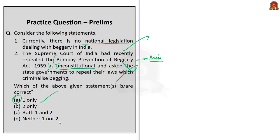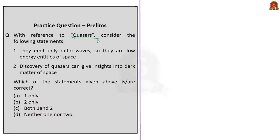With reference to quasars, consider the following statements. Statement 1, they emit only radio waves. So, they are low energy entities of space. Statement 2, discovery of quasars can give insights into dark matter of space. And you need to find the right option. Quasars are high energy phenomenon that emit light, radio waves, x-rays, etc. So, based on this, we can infer that statement 1 is wrong. Coming to statement 2, as seen in the discussion, quasars help in understanding space better, including the dark matter. So, therefore, this statement is correct. Since the question wants us to find the correct statement, the right option is option B, that is two only.